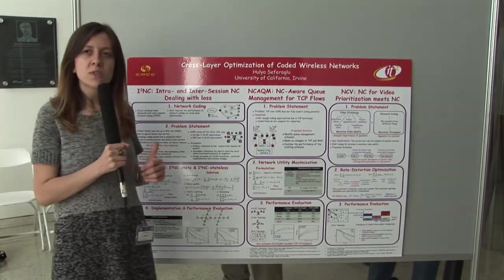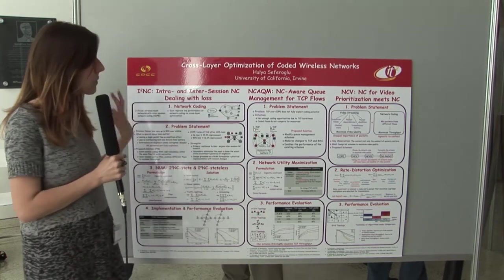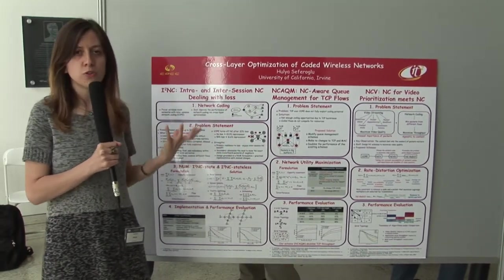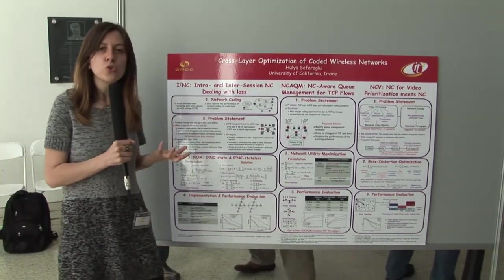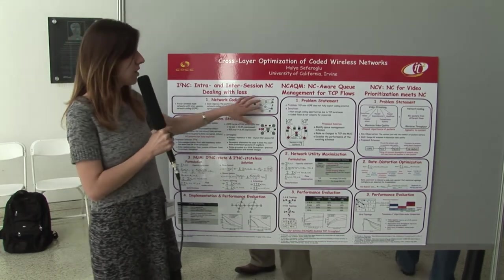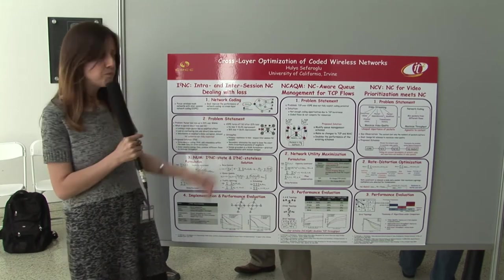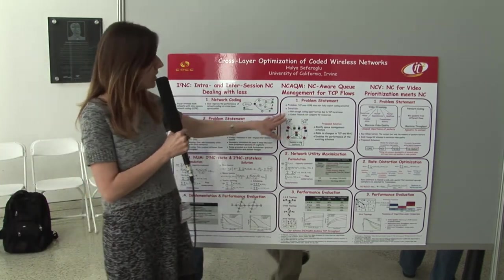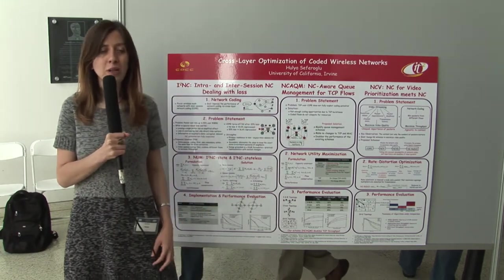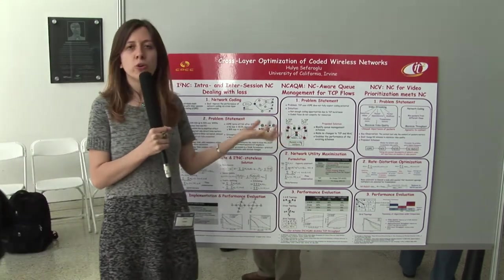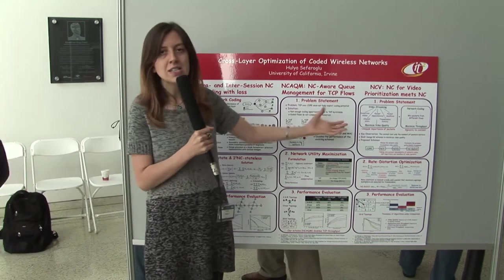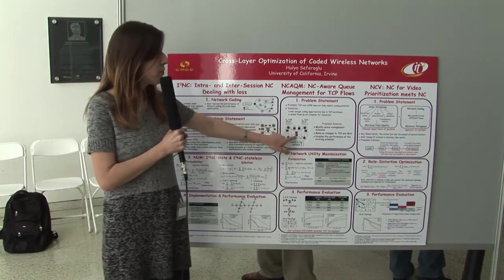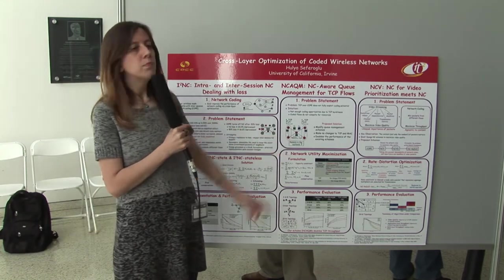The second part of my work is the joint optimization of network coding and rate control. It has been observed that when we do network coding, we generate new flows — these are coded flows — and this eventually introduces new conflicts and new requirements. So in the new network design, this should be considered. Specifically, we consider TCP and its optimization with network coding. With TCP, the problem is that TCP doesn't fully exploit network coding potential. The reason is that there are not enough network coding opportunities at intermediate nodes due to TCP burstiness. The other reason is that coded flows do not compete for resources — either the buffer size at intermediate nodes or the downlink bandwidth.